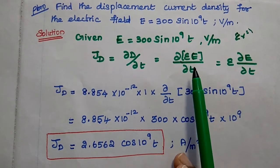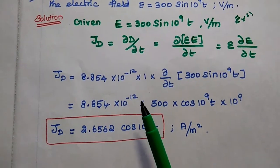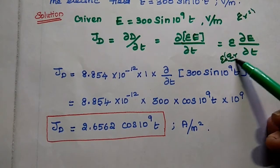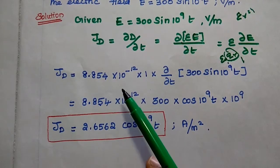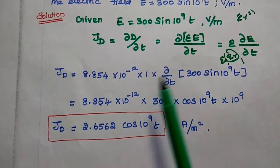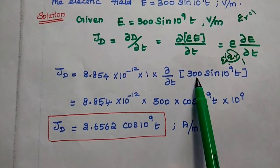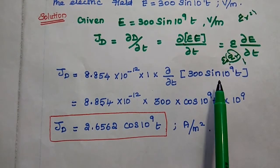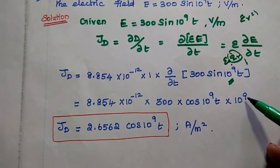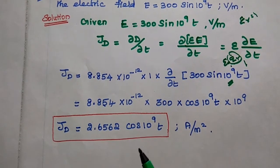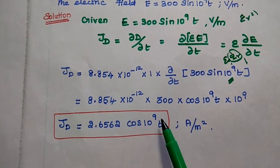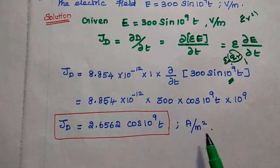Here D = epsilon times E, so we can write JD = epsilon × ∂E/∂T, where epsilon = epsilon_naught × epsilon_R = 8.854 × 10⁻¹² × 1. Differentiating 300 sin(10⁹T) with respect to time: the constant 300 comes outside, differentiation of sin gives cos, multiplied by 10⁹. We get the displacement current density equal to 2.6562 cos(10⁹T) amps per meter squared.